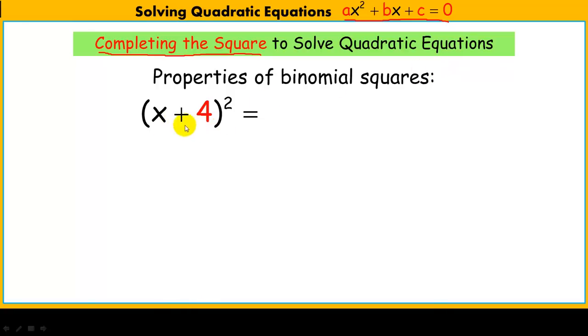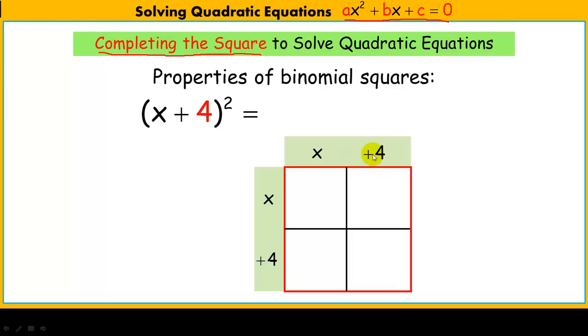So when we square a binomial, whether you use FOIL or an area method, basically you're saying x plus 4 times x plus 4. As I model in the area model, each one of these represents an area. X times x is x squared, 4 times x is 4x, 4 times x is 4x, 4 times 4 is 16.